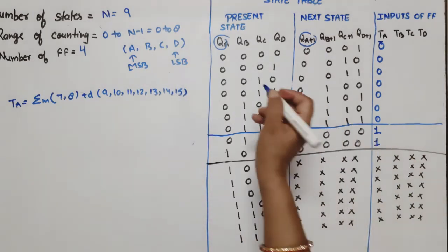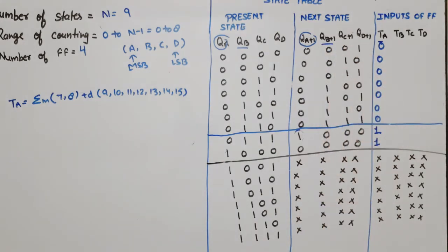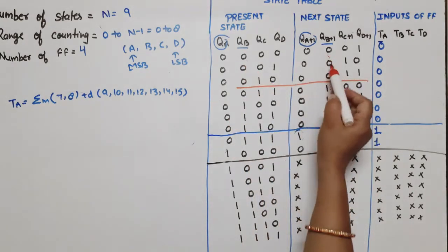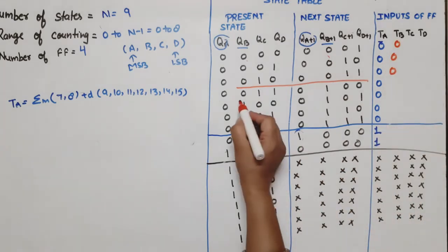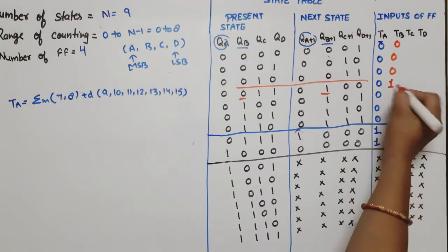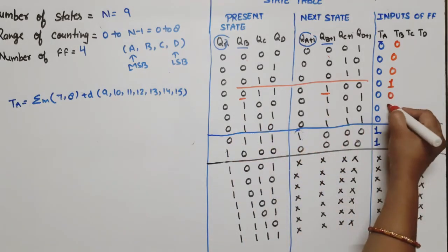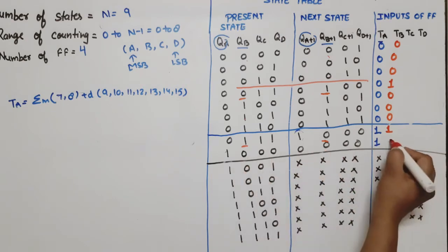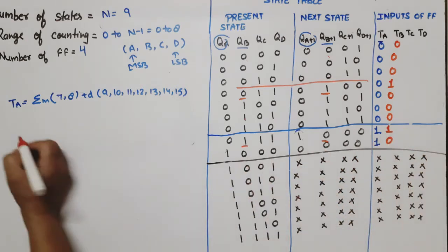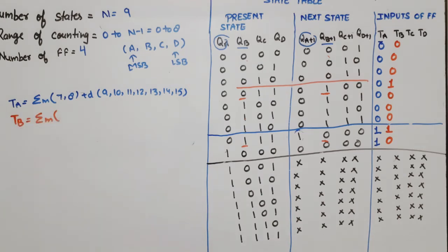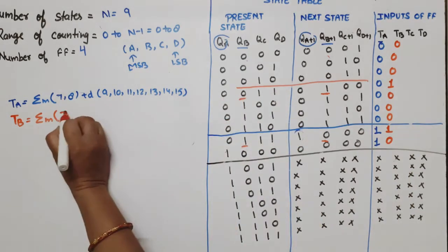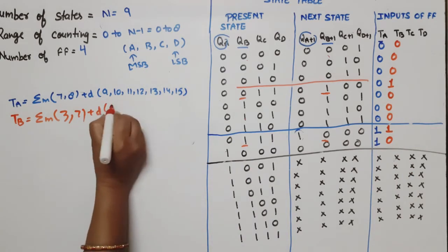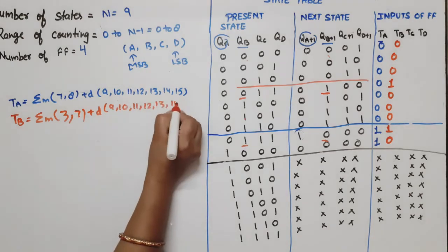For TB, we consider QB and QB_next. From states 0 through 3 the QB values are the same, so TB is 0. Then at state 3 to 4 it changes, giving TB=1. TB remains 1 through states up to 7, then the last 3 cases return to 0. The TB equation is summation of minterms at 3 and 7, plus don't-cares at 9, 10, 11, 12, 13, 14, and 15.